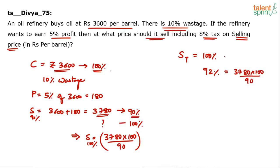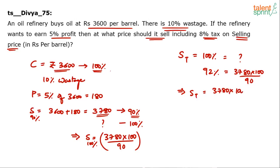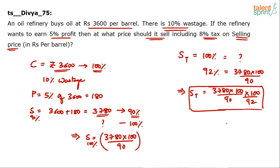So 92% equals 3780 × 100 / 90, and 100% is what we have to find. The final selling price including taxes is: 3780 × 100 / 90 × 100 / 92. Cross multiply to get the final answer.